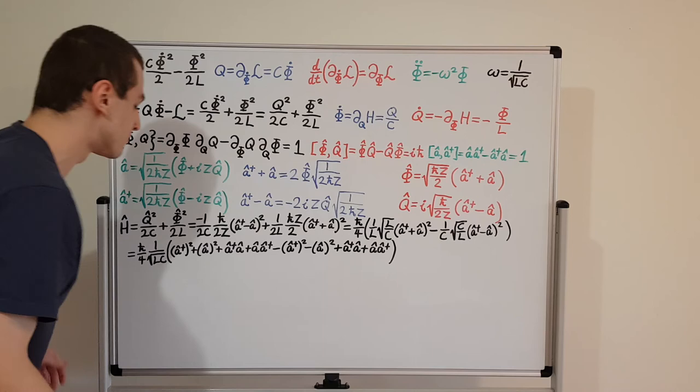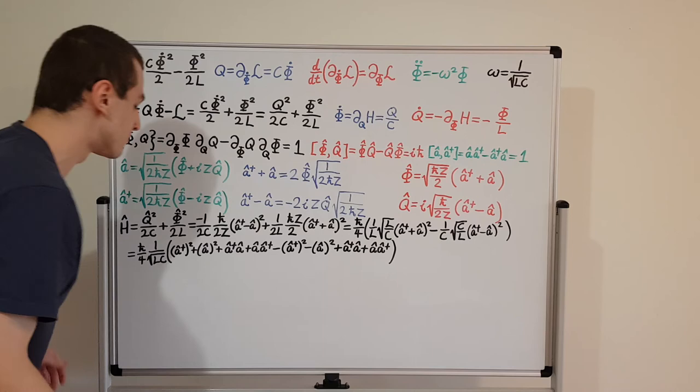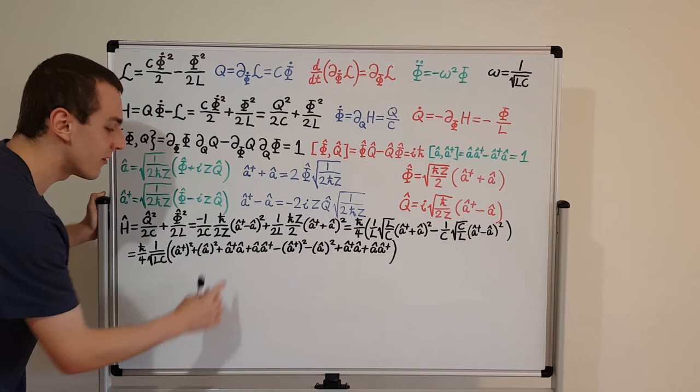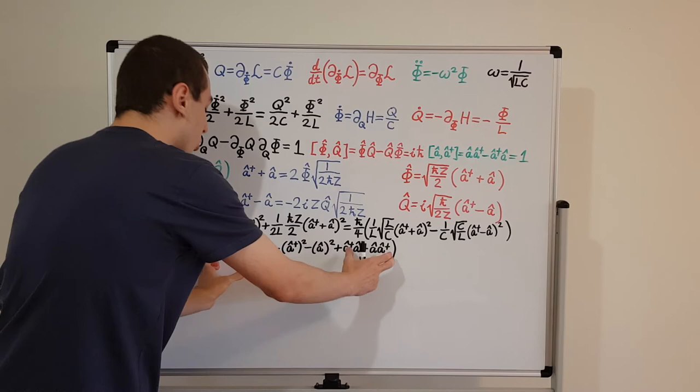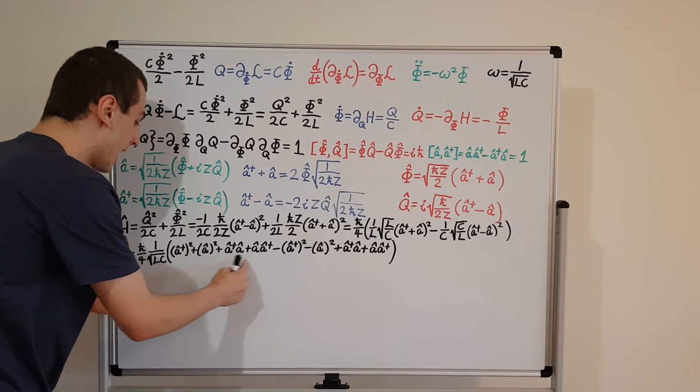Looking at all these terms: a dagger squared cancels with minus a dagger squared, and a squared cancels with minus a squared. The remaining terms are a dagger a, a a dagger from the first part, and a dagger a, a a dagger from the second part — we have two copies each.